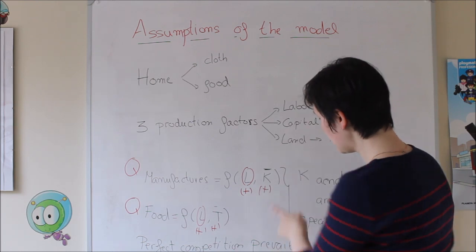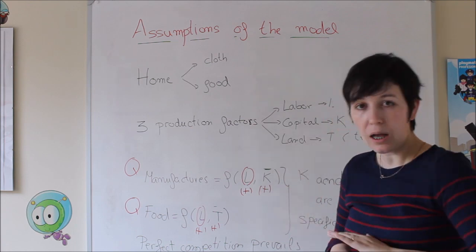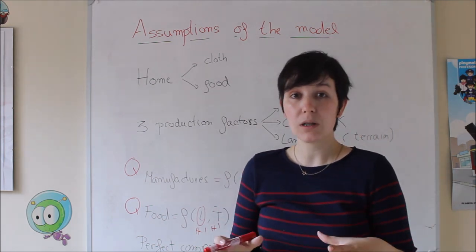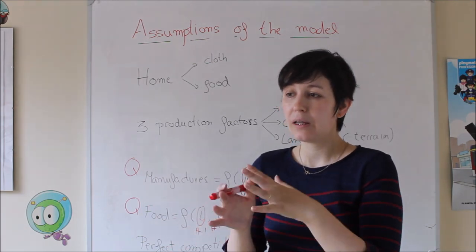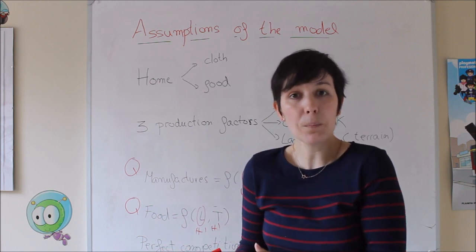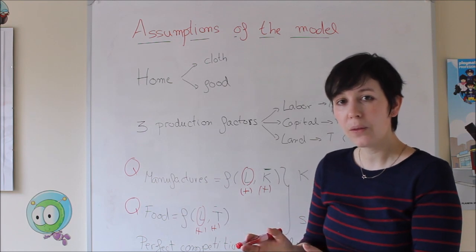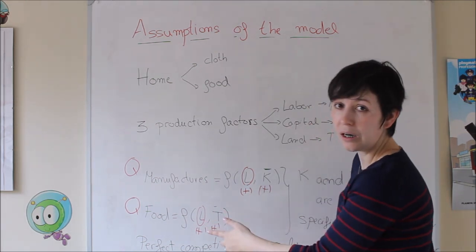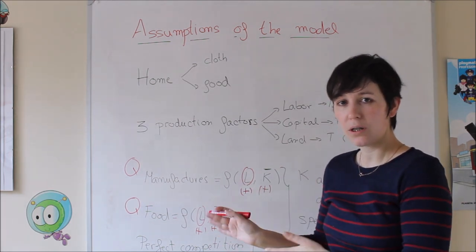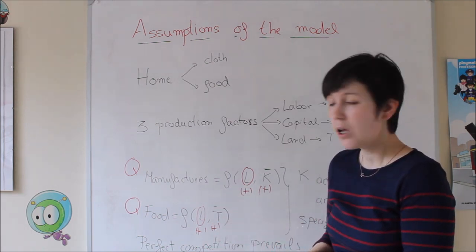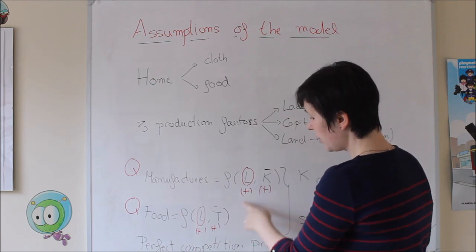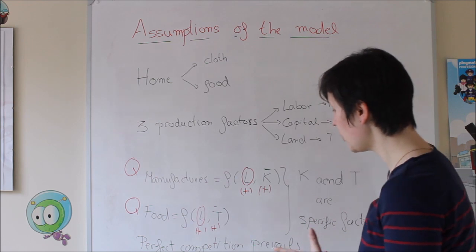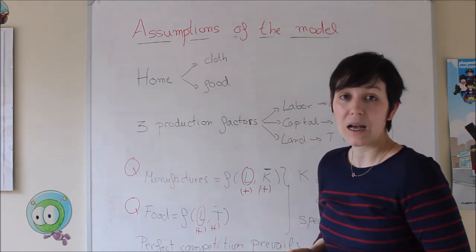Capital is going to be fixed — it's a constant number that doesn't change. The same thing with land. Labor is also constant in total within the economy, meaning the total number of workers is fixed. However, you can have different combinations of labor working in one or the other industry. So you can have a small amount here and a high amount there, or vice versa — there are many possible combinations. As higher as the amount of labor in one industry, the output is going to be higher.